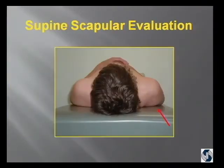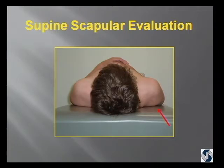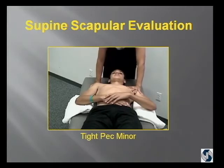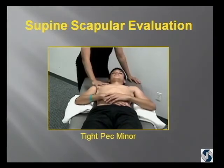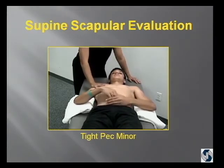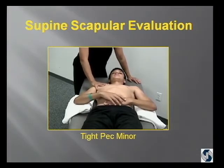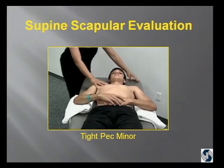When I look at the patient supine to assess pec minor tightness — in this case a 16-year-old pitcher — the humeral head will not come down to the table. Here's another example: when this boy was 15, look at how much his shoulder has to bounce up to get his scapula down. That's a tight pec minor.